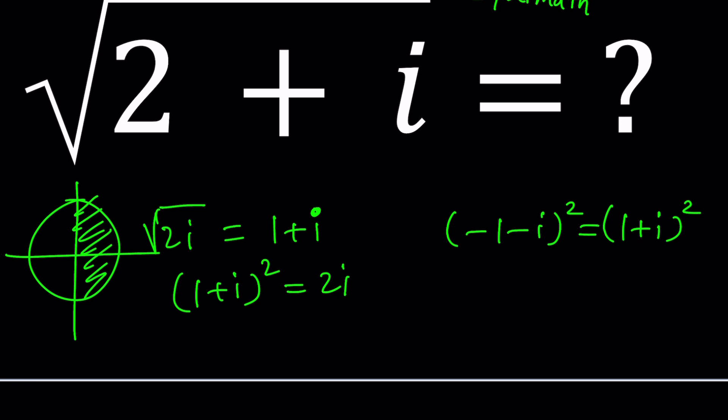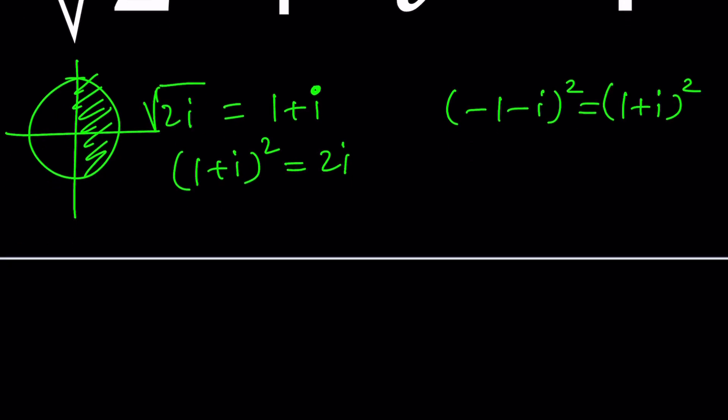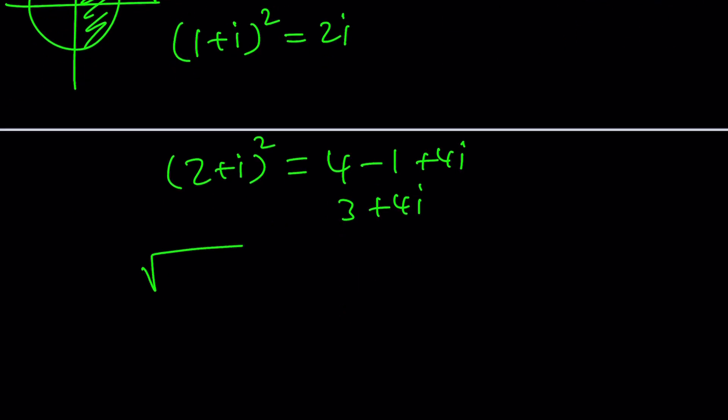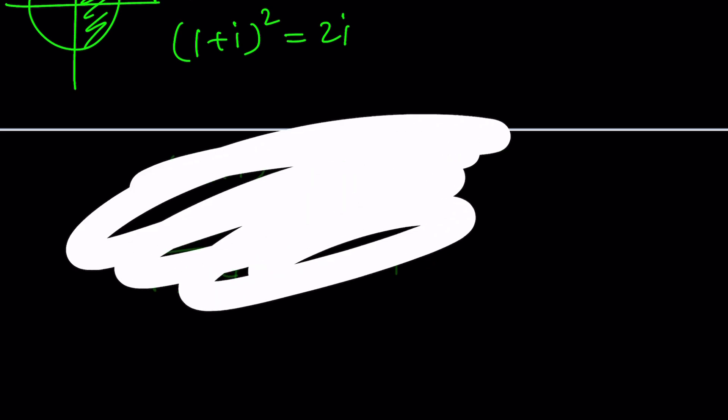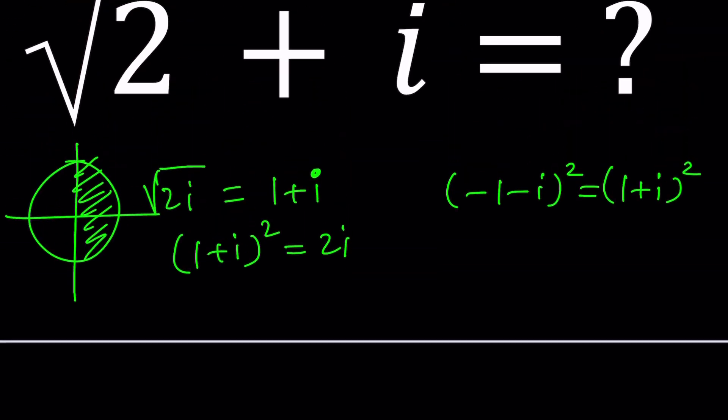But how do we find something like 2 plus i? If I had 2 plus i and I squared it, I would be getting 4 minus 1 plus 4i, which is 3 plus 4i. So if they asked us to find the square root of 3 plus 4i, that would be 2 plus i, the principal square root. Things would be super easy because these are nice numbers. But we don't have that case, so we're going to have to deal with some radicals.